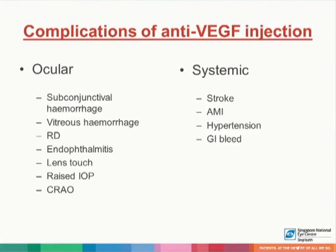Complications of anti-vascular endothelial growth factor injection can be divided into ocular as well as systemic. Ocular complications include subconjunctival hemorrhage, vitreous hemorrhage, retinal detachment, endophthalmitis, lens touch, raised intraocular pressure, and central retinal artery occlusion. Systemic complications include stroke, acute myocardial infarction, hypertension, as well as gastrointestinal bleed.